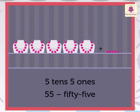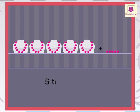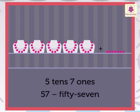Five tens and six ones is 56. Five tens and seven ones is 57.